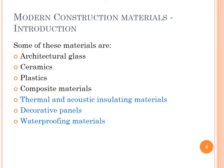As we know, there are a variety of modern construction materials being used nowadays. This is mainly because of its ambience, cost, reliability, durability etc. Some of these materials are architectural glass, ceramics, plastics, composite materials, thermal and acoustic insulating materials, decorative panels, waterproofing materials etc.